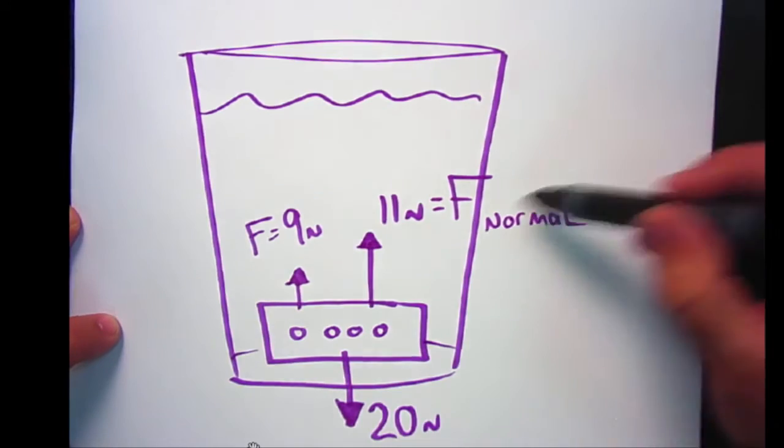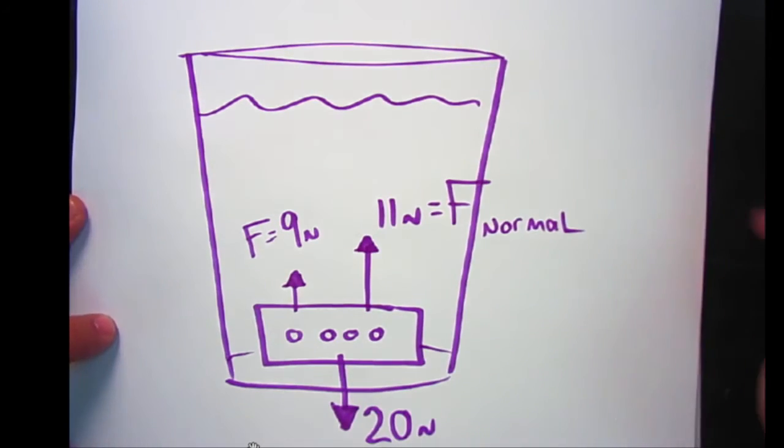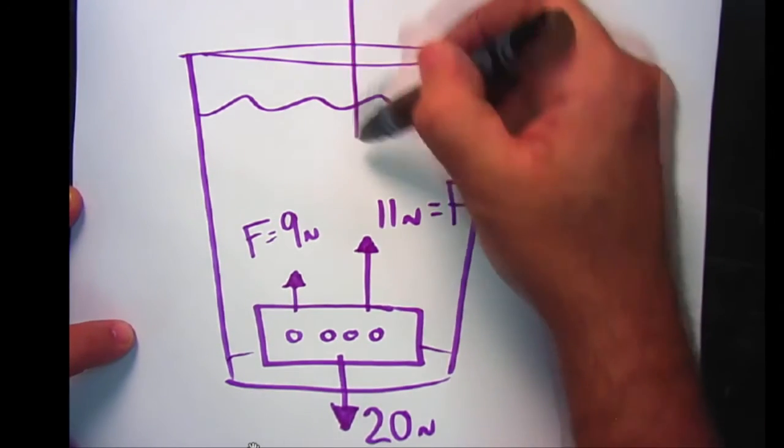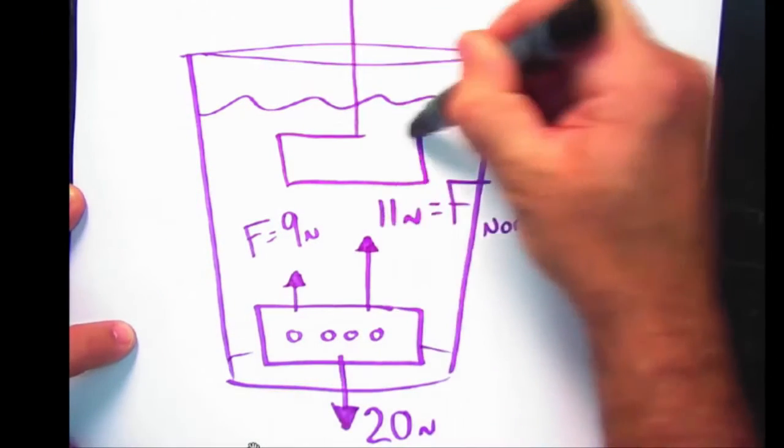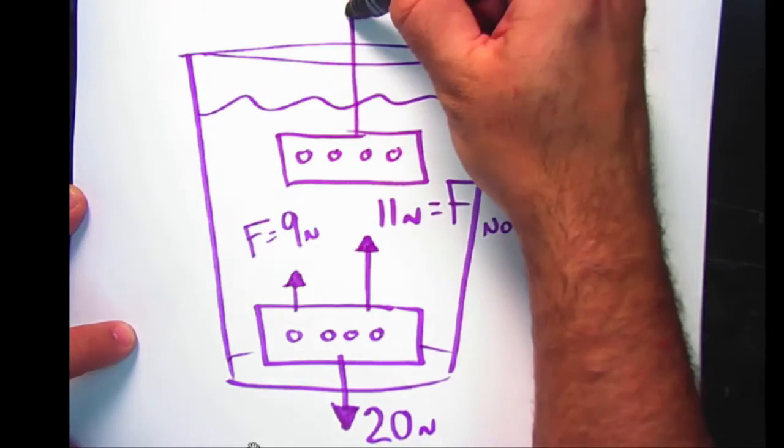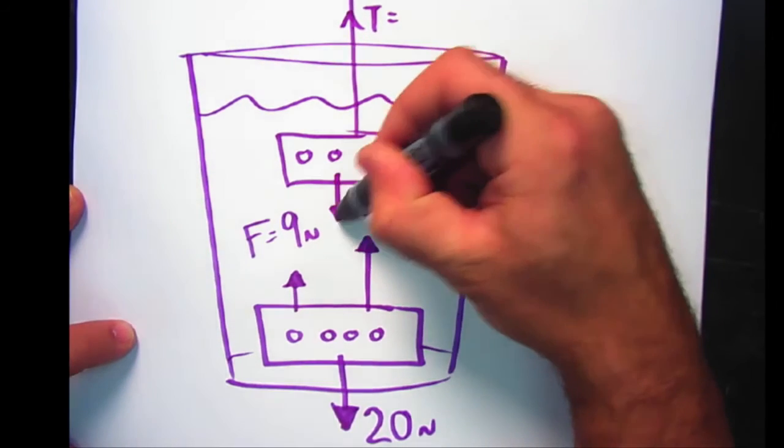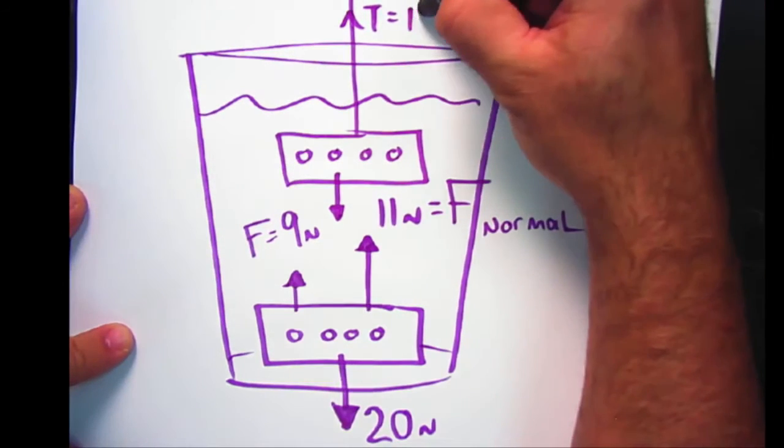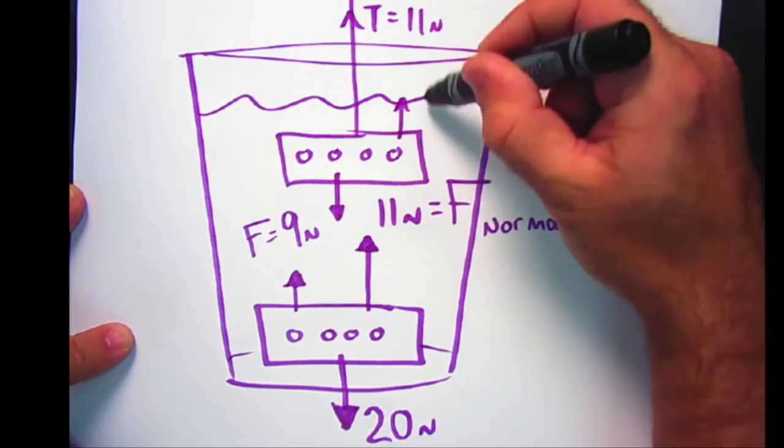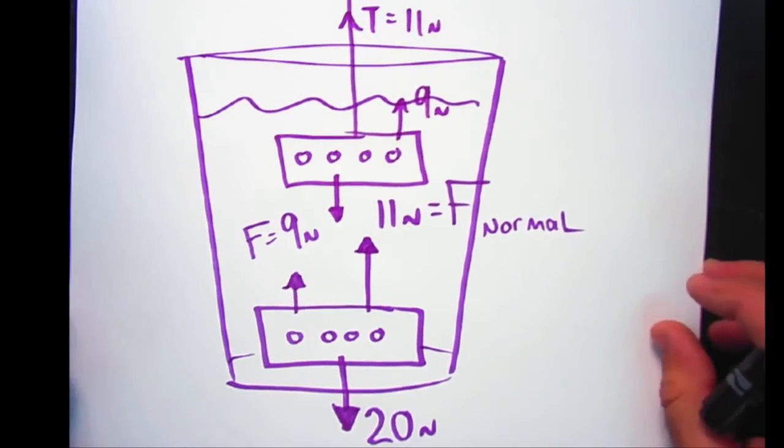The force that the surface has to push back in order to hold up the brick. Coincidentally, it's the same as what we saw in the tension of the string in order to keep the brick from sinking. We had a tension of 11 newtons and a buoyant force of 9 newtons. Okay, let's take a break from these notes and solve some problems that require buoyant force.